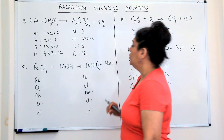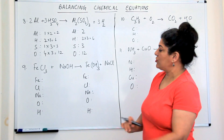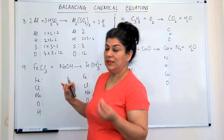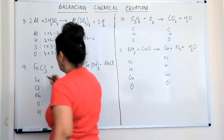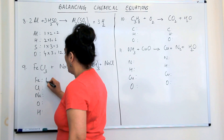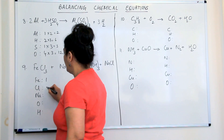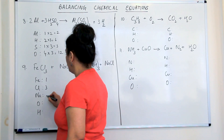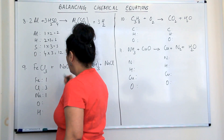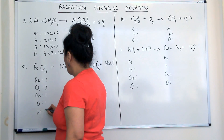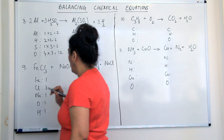When we have to solve this, let us first write down the elements. How many irons do you have on the reactant side? One. How many chlorines? Three. How many sodiums? One. How many oxygens? One. Hydrogen? One.